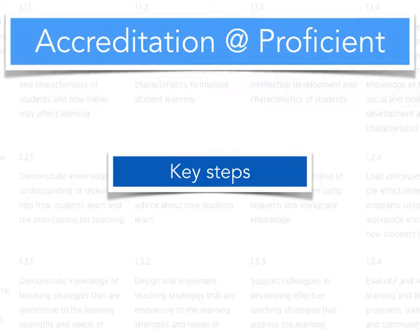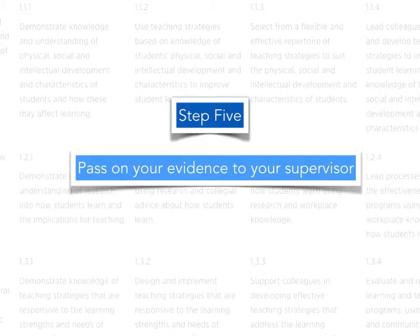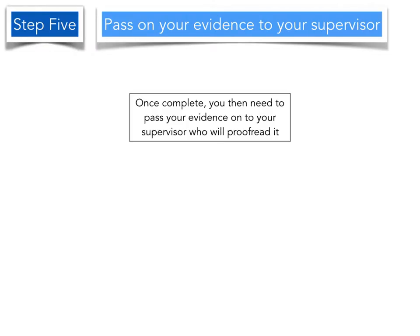This video will provide an overview of step 5 for accreditation and proficient: passing on your evidence to your supervisor. It's important that once complete, you pass on your evidence to your supervisor, who will proofread it for you and let you know if there's anything that you need to improve or address.